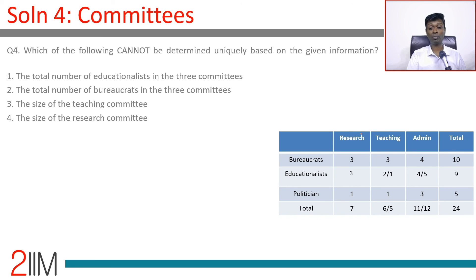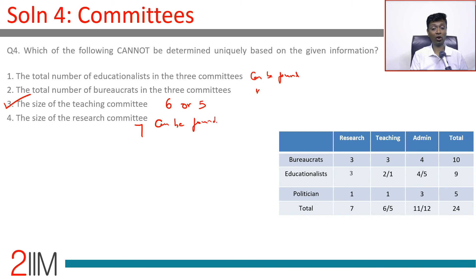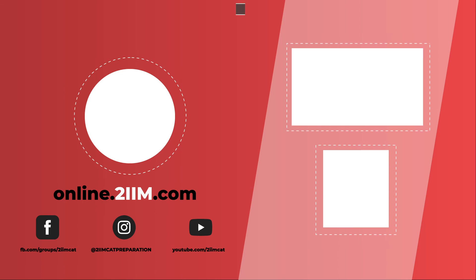Question 4: Which of the following cannot be determined uniquely based on the given information? The total number of educationalists in the 3 committees is 9 — can be found. The total number of bureaucrats in the 3 committees is 10 — can be found. The size of the teaching committee could be 6 or 5 — this cannot be uniquely determined. The size of the research committee is 7 — can be found. So the answer is: the size of the teaching committee cannot be uniquely determined.